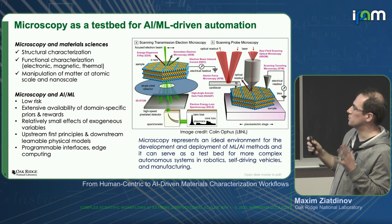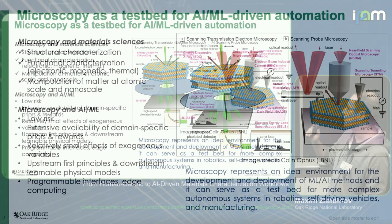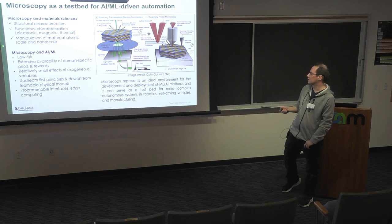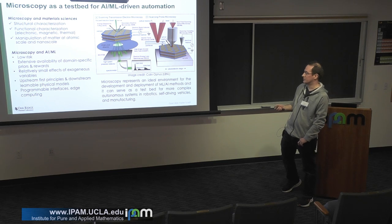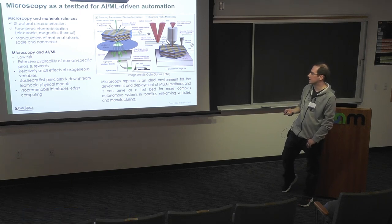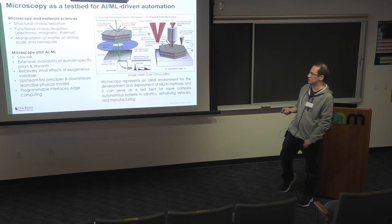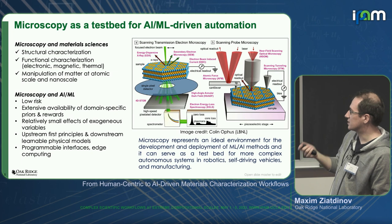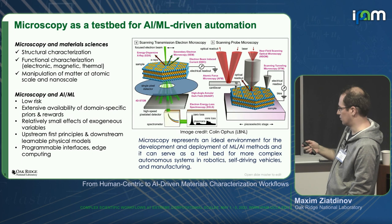Recently we published a paper in Machine Learning and Science Technology called 'Microscopy is All You Need,' where we argue that microscopy represents an ideal environment for development and deployment of various AI methods, and that it can serve as a low-risk testbed for more complex autonomous systems in robotics, self-driving vehicles, and so on. Why? It's low-risk — unlike self-driving cars, you're not going to kill anyone. We have extensive availability of domain-specific priors and rewards, relatively small effect of exogenous variables, connection to first principles, learnable physical models, and programmable interfaces, as well as connection to high-performance computing becoming more common practice.